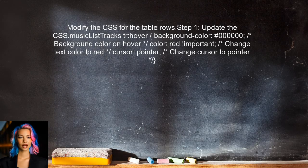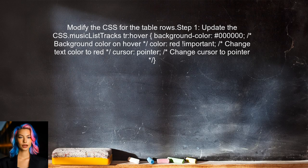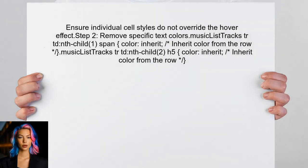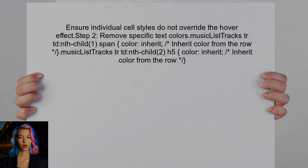To achieve the desired hover effect, the user should modify the CSS for the table rows. First, we need to ensure that the text color changes for all cells in the row when any cell is hovered over. Next, the user should ensure that the individual cell styles do not override the row hover effect. This can be done by removing any specific text color styles from the individual cells.